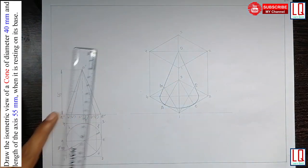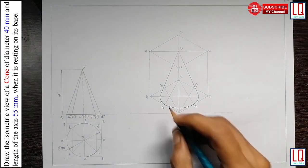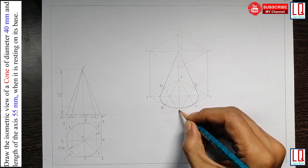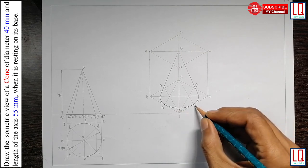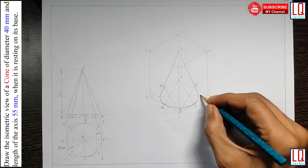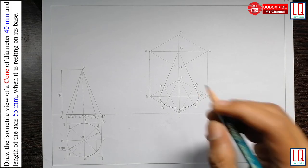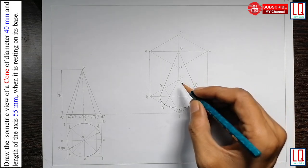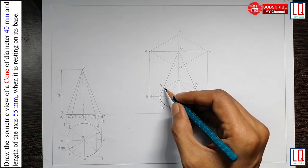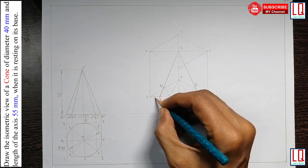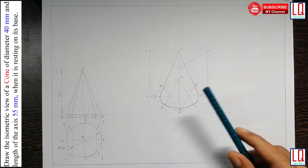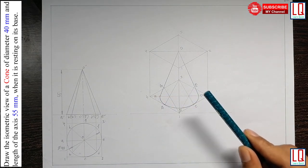Now, I name A, B, C, D, E. F is not visible here. G here and this point is H. So, the isometric view of the cone is completed.